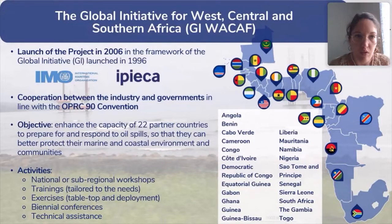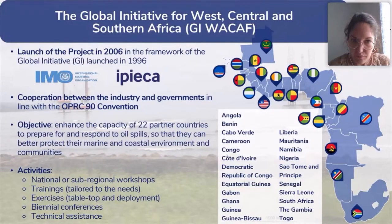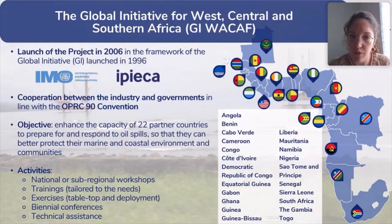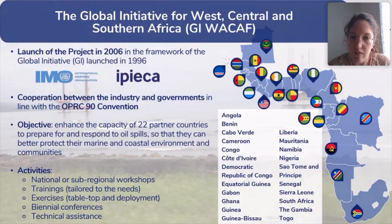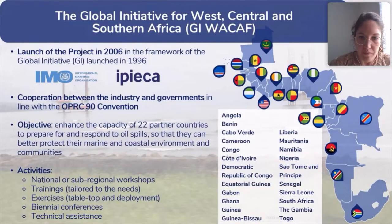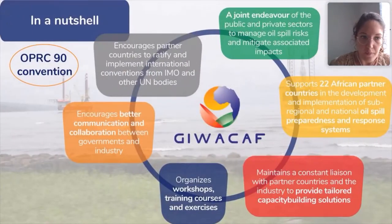The objective of the project is to enhance the capacity of 22 partner countries on the Atlantic coast of Africa to prepare for and respond to oil spills, so that they can better protect the marine and coastal environment and communities. To do so, the JIWAKA project organizes activities such as national or sub-regional workshops, trainings, exercises, final conferences and technical assistance activities.